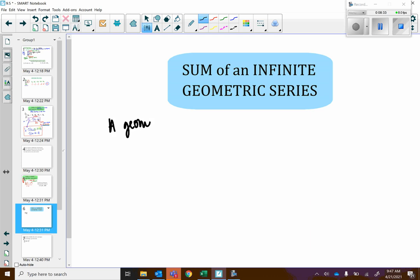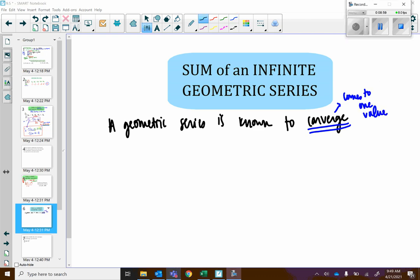A geometric series is known to converge. And we talked about this in class the other day. To converge means it comes to one value. So a geometric series is known to converge or go to one value if and only if the value of r, specifically the absolute value of r, is less than 1. So let's consider what this means.